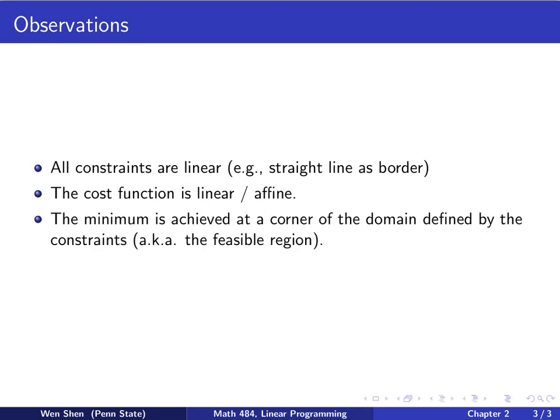So under these two conditions, we observe from our example that the minimum, which is the optimal point here, is achieved at a corner of this domain defined by all the constraints, aka, we call it the feasible region.